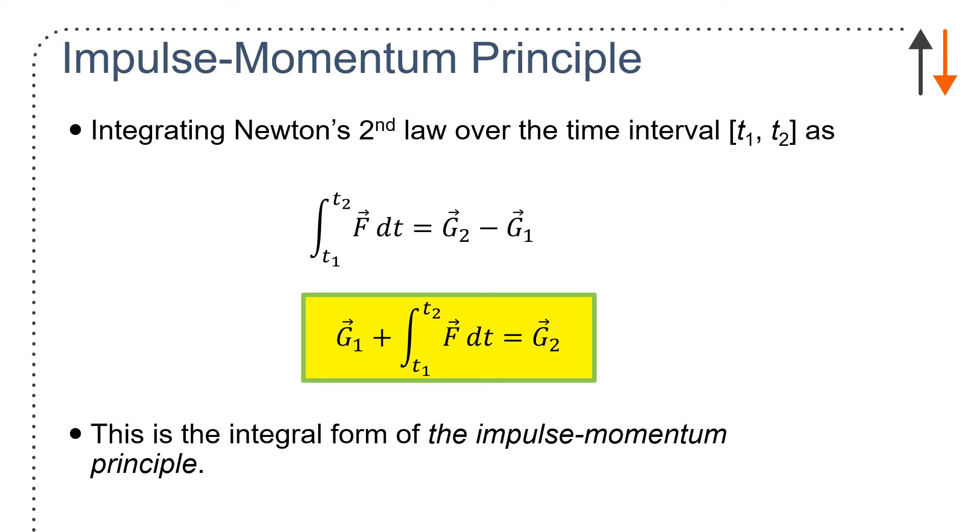So if you integrate Newton's second law over the interval from time one to time two, you end up with this term right here. So F dt, integrated from T1 to T2, is G2 minus G1. And that's the integral form, and you're going to use that a lot in this course.